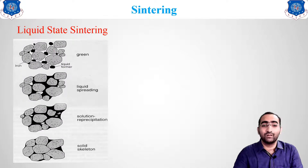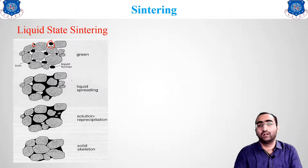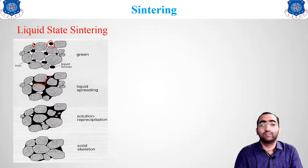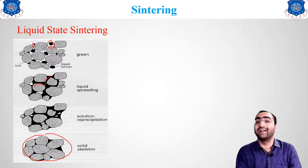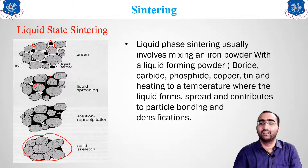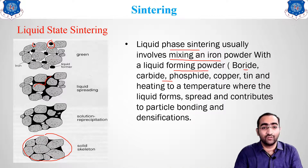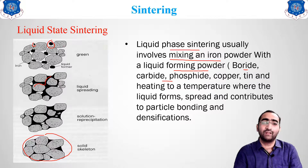In liquid state sintering, a liquid material is used because in solid state sintering voids can remain inside. A liquid-forming powder — such as borides or carbides — is mixed with the base powder. These are solid initially but convert to liquid upon applying a small amount of heat, spreading in all directions to bring particles closer together.